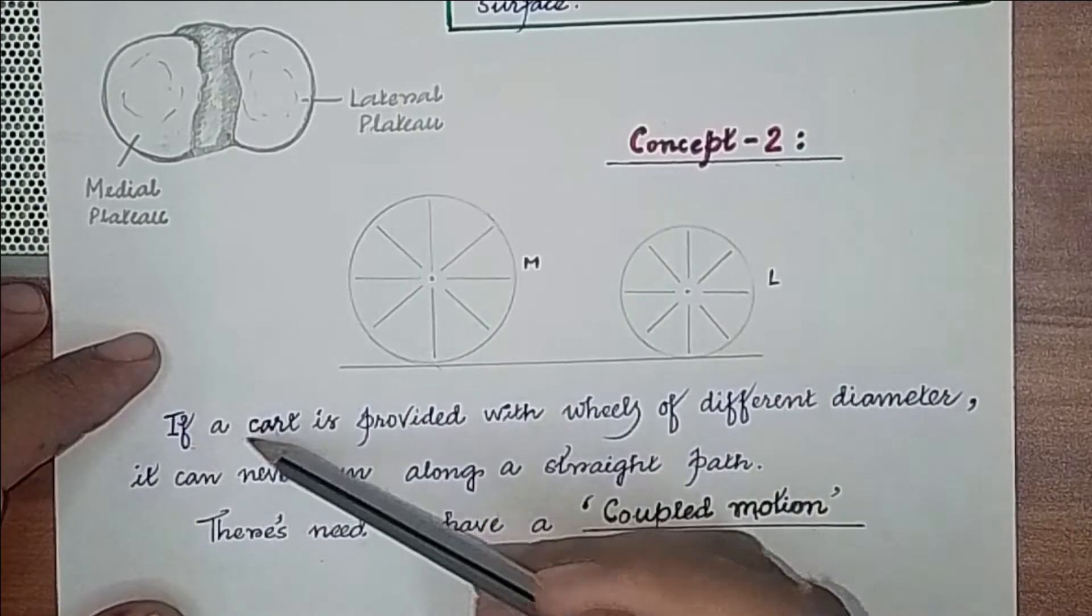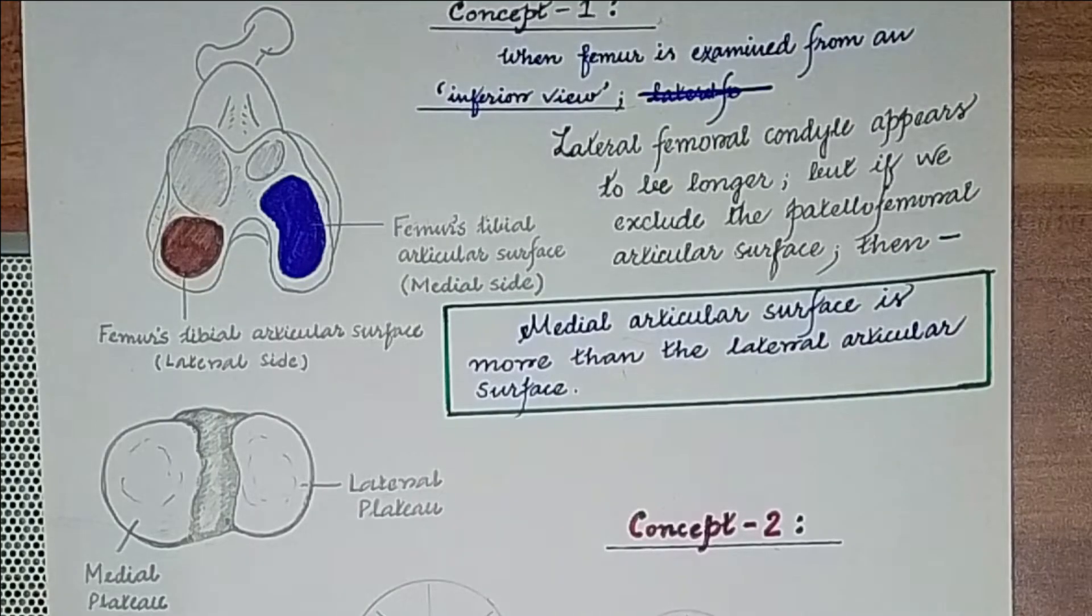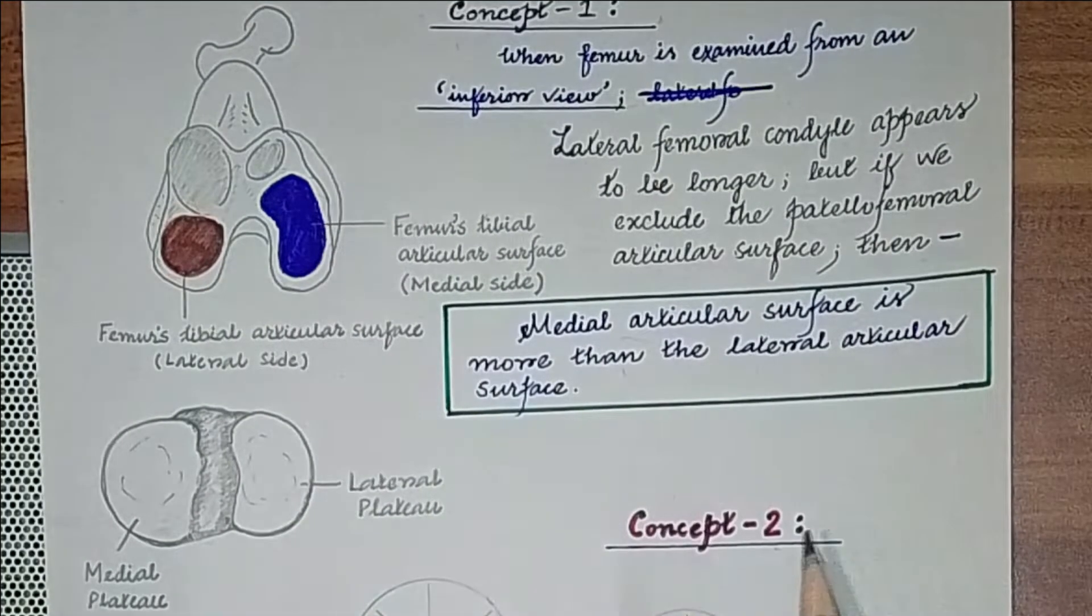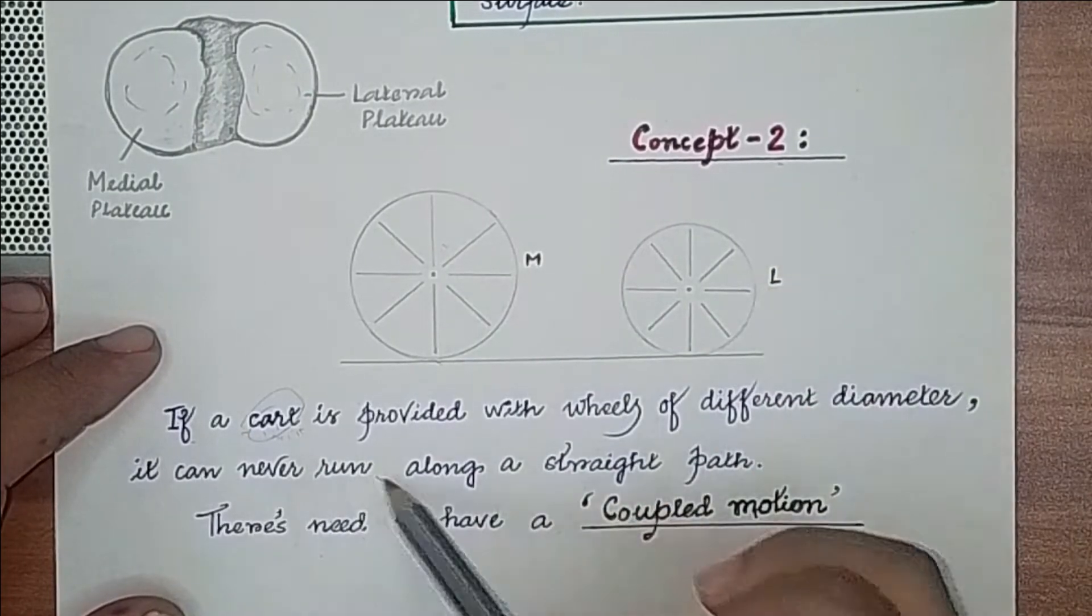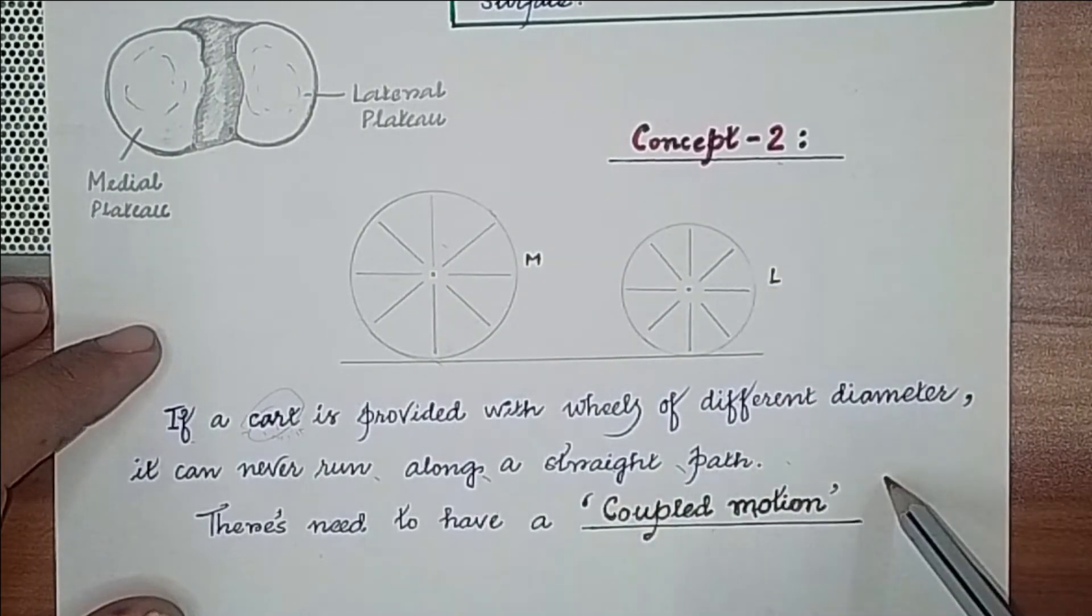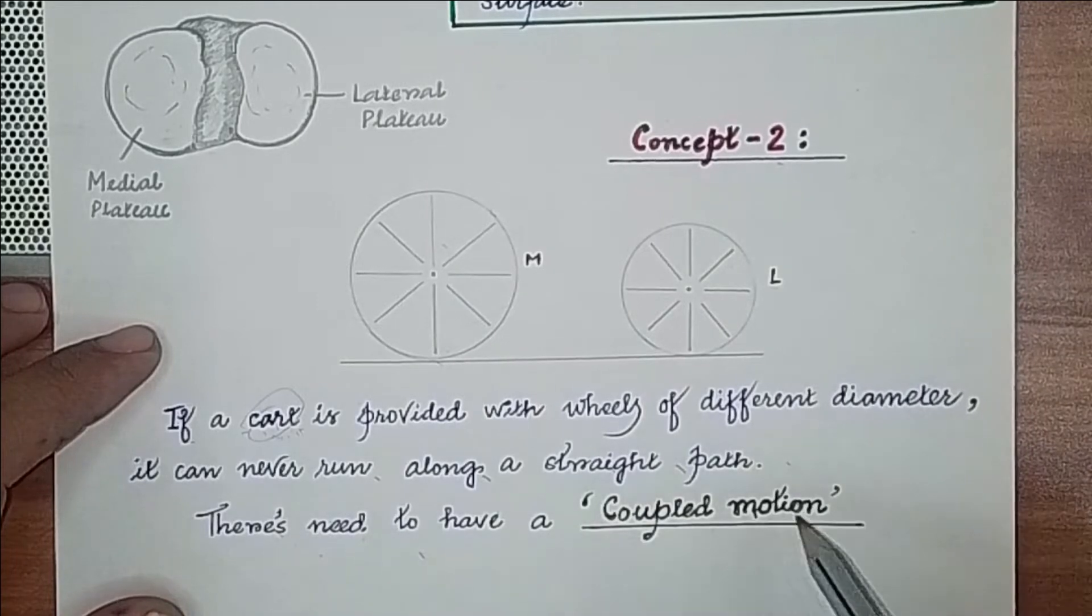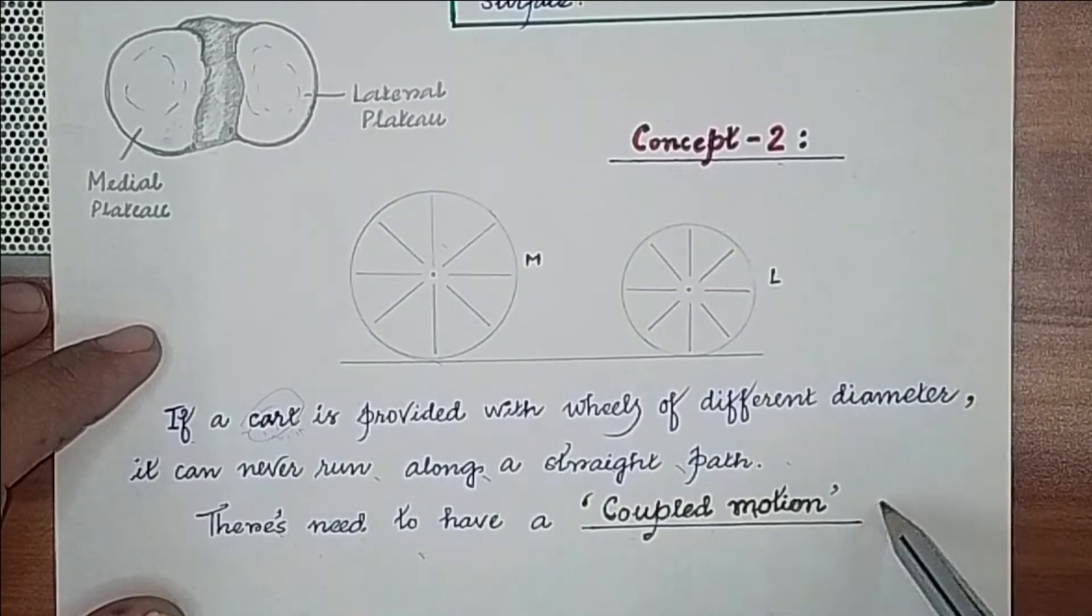The second concept is that if a cart—imagine the cart with medial and lateral articular surfaces—is provided with wheels of different diameters, it can never run along a straight path. There's a need to have a coupled motion, that is, a combination of motions.